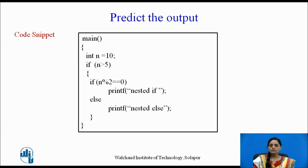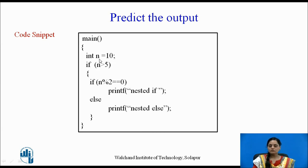Time to reflect. Go through the given program and try to find out what the output could be. Pause the video for a moment and think about it. As you can see, we are writing an if statement within another if — we are using nesting of ifs. The given value of n is 10. Since 10 is greater than 5, this condition evaluates to true, and the program's flow comes inside the curly braces of the first if.